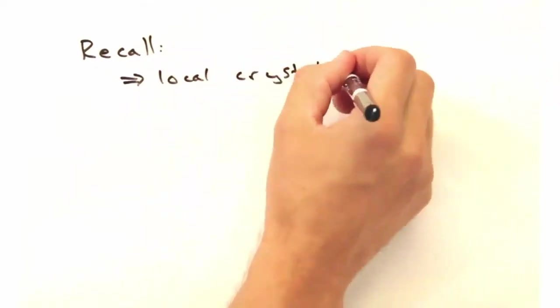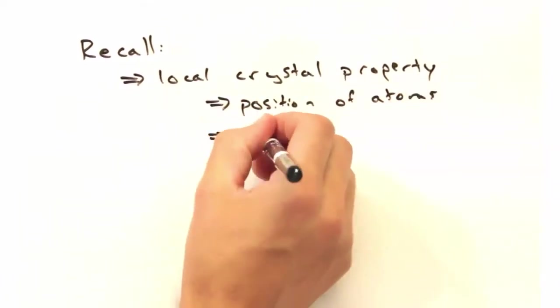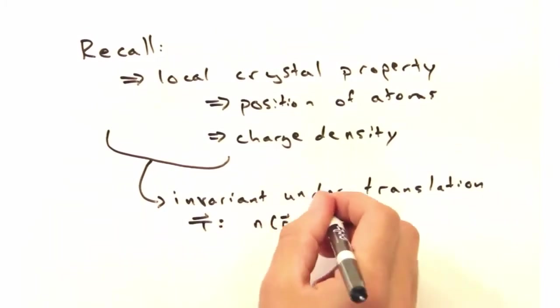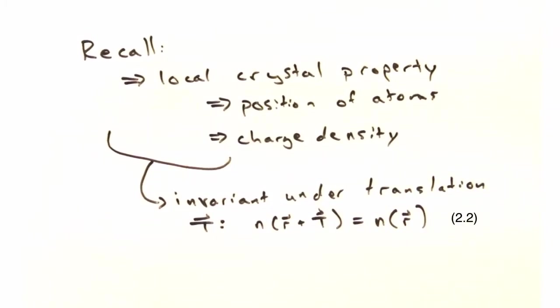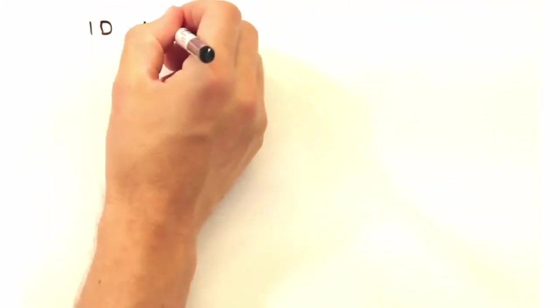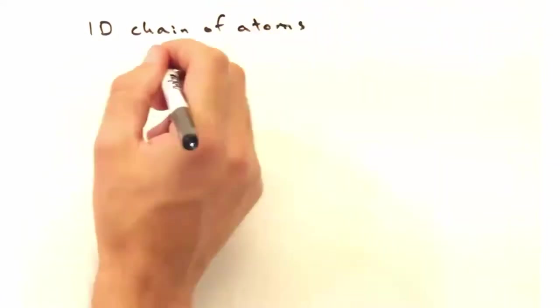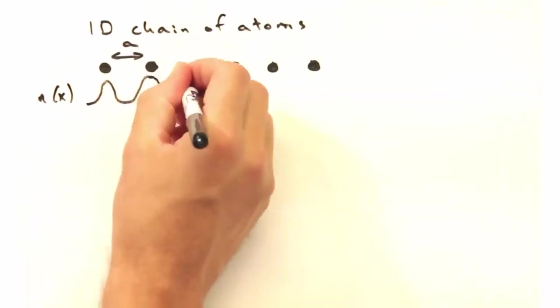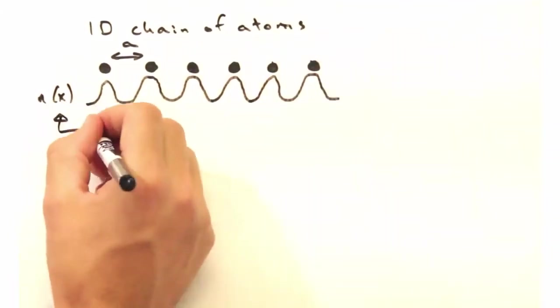Recall last week that we determined that any local crystal property, such as the atom's position or the local charge density, is invariant under the translation vector t. So suppose we have a 1D chain of atoms with spacing a. In this case, let's just approximate our charge density as a wave like this, with charge buildup centered over each atom.